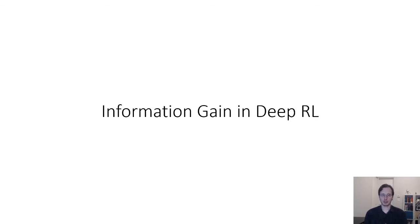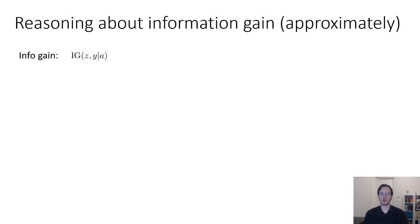The last category of deep RL exploration methods we'll talk about are methods based on information gain. To recap, when we reason about information gain, what we want to do is select an action that will result in an observation that in expectation will give us the most information about some variable of interest called z. The question we have to answer when we actually implement these algorithms is: information gain about what?